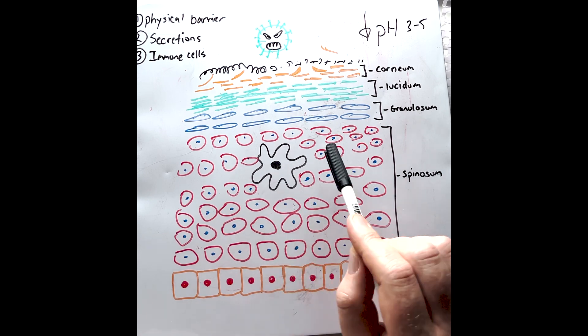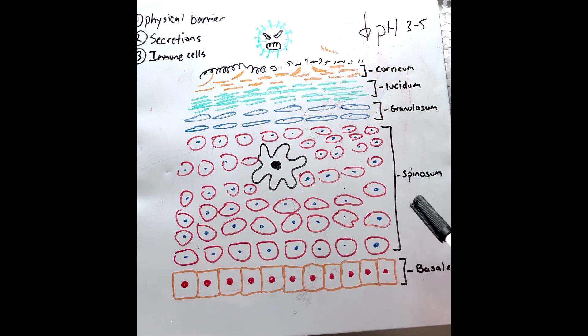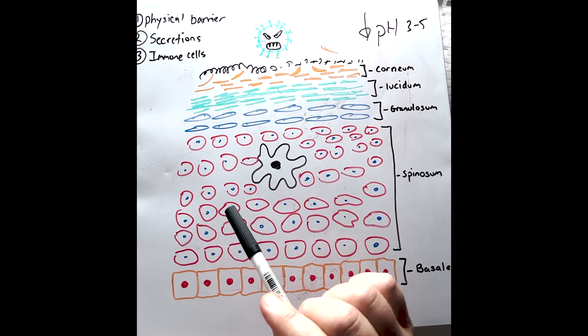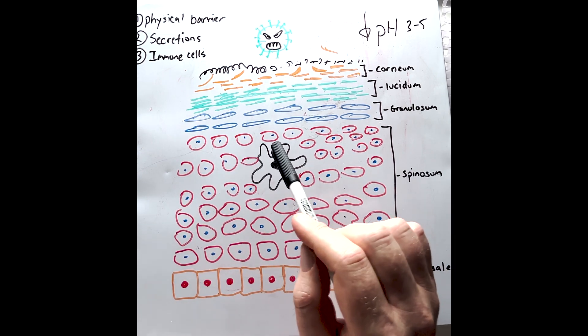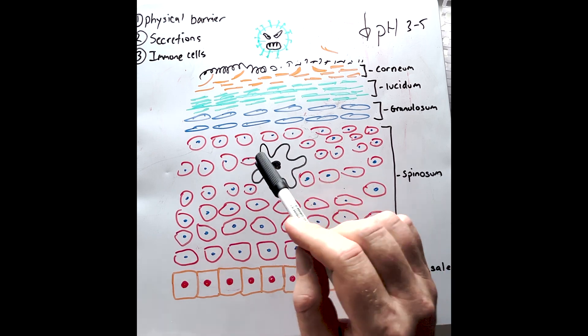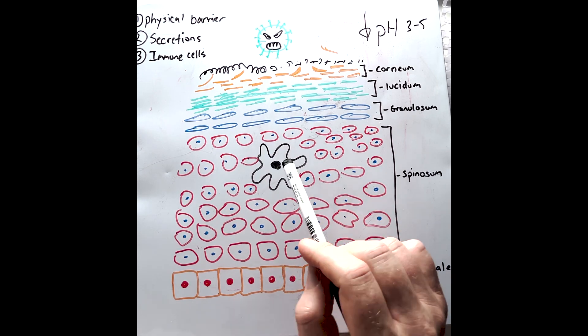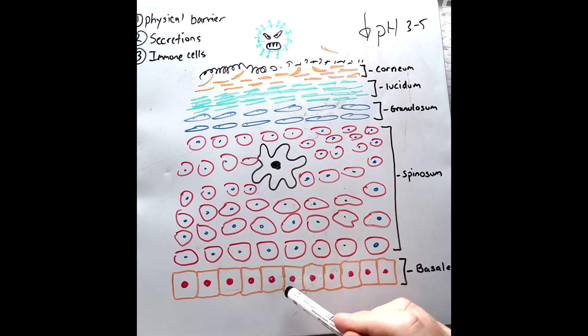These Langerhans cells sense the microenvironment in the spinosum layer and look for the presence of certain microorganisms, the chemicals they produce, and any injured cells. When they sense danger, they send chemical signals down into the dermis, which begins the inflammatory process and helps T cells migrate up for specialized help.